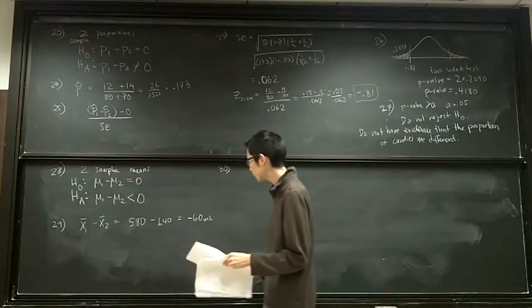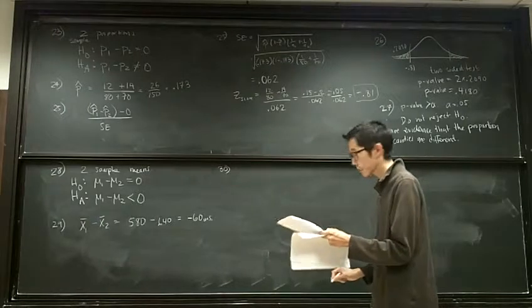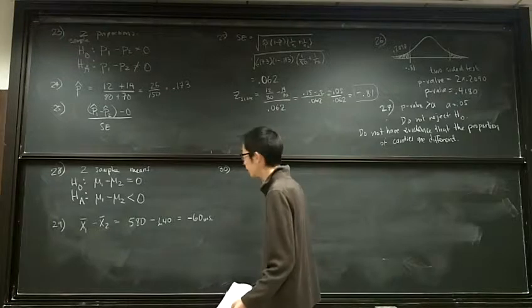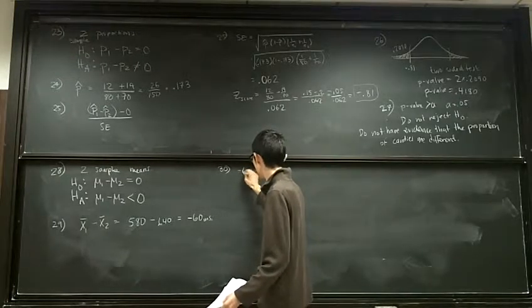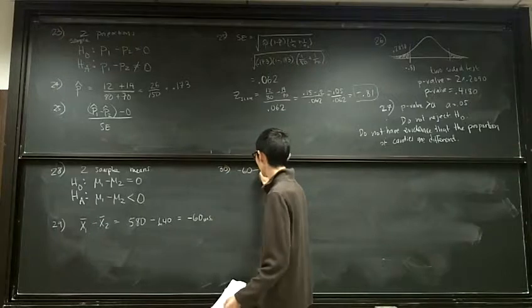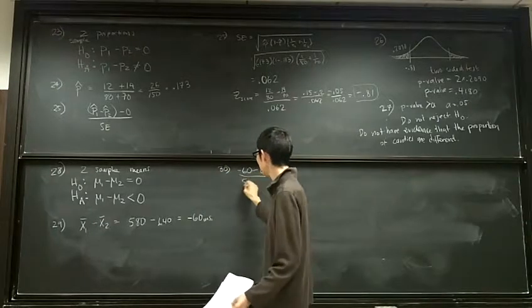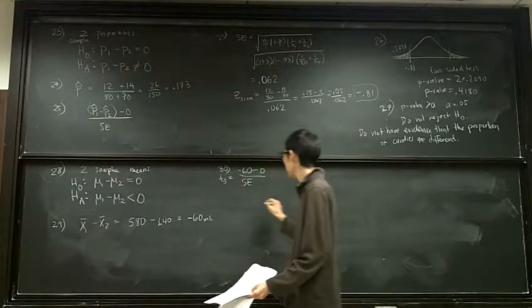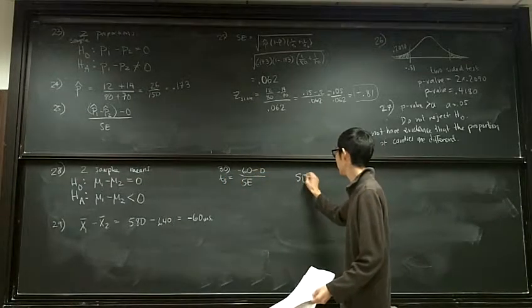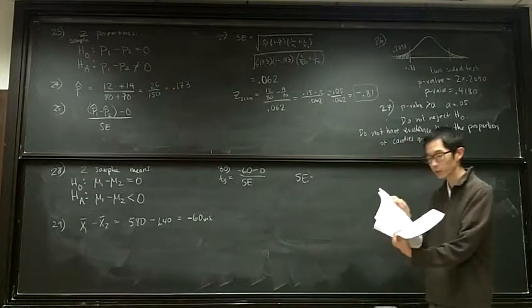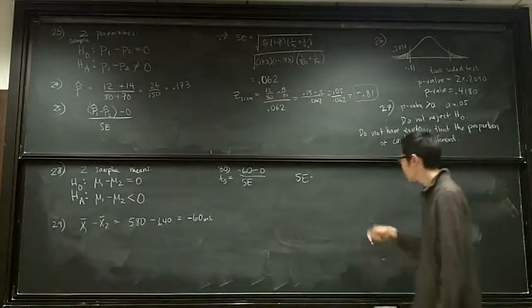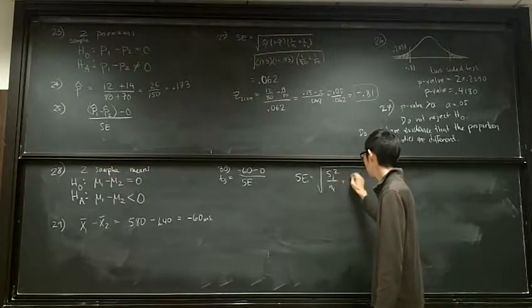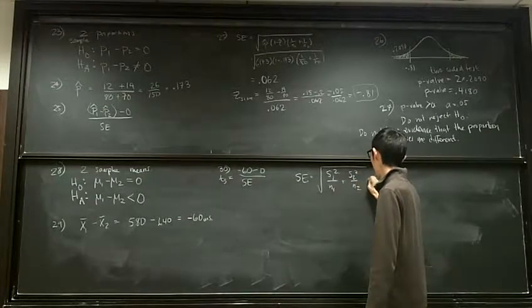The third is asking, what is our test statistic? Okay? So on top, we're going to put our observed difference, which is negative 60 milliseconds, minus the null, which says zero. And we're going to divide by our standard error. This is what our test statistic is going to be. And our standard error, okay, and again, everything is on your study guide if you just follow the steps. In this case, our standard error is going to be s1 squared over n1, plus s2 squared over n2.